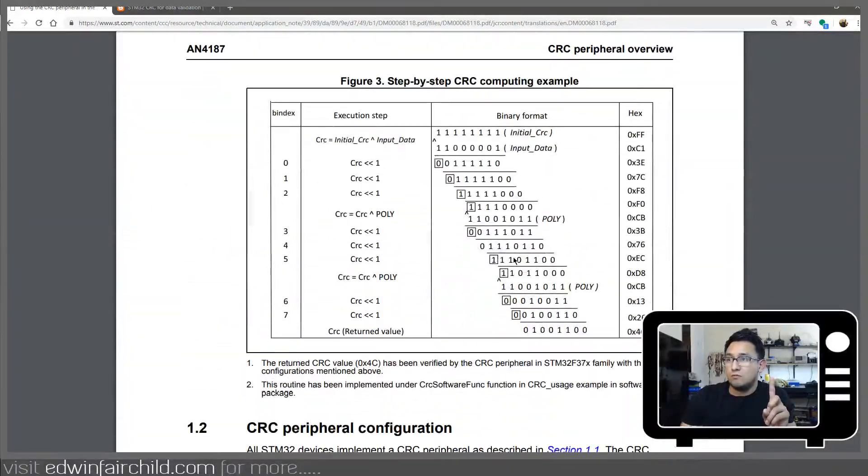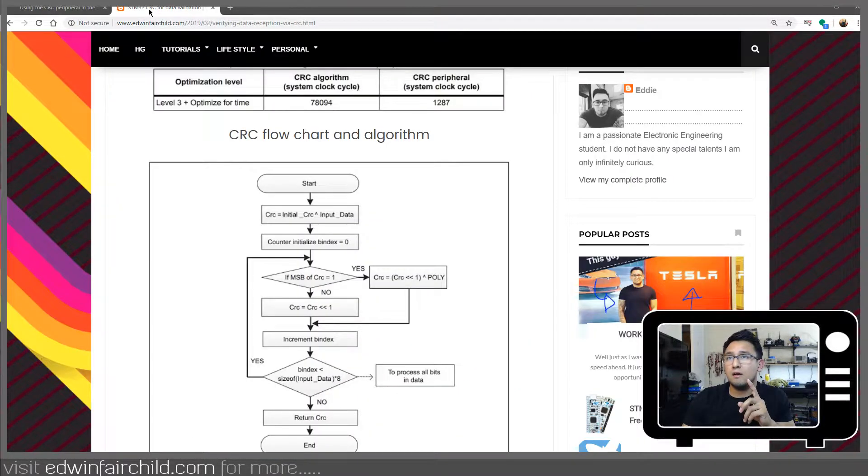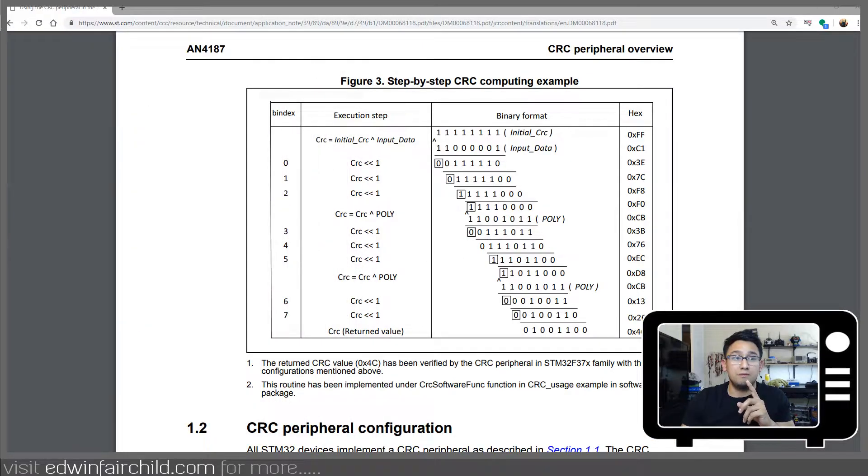It would take about 78,000 clock cycles for the algorithm to compute versus only 1,200 just about clock cycles by letting the hardware do it. So it's been implemented in hardware. So I mean that is a huge difference, right? So definitely don't implement it in C. I mean you can for fun, that's great. But if you're really going to use it, go ahead and let the hardware do all the grunt of the work.